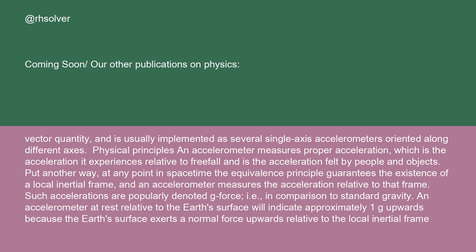An accelerometer measures proper acceleration, which is the acceleration it experiences relative to freefall and is the acceleration felt by people and objects. Put another way, at any point in space-time, the equivalence principle guarantees the existence of a local inertial frame, and an accelerometer measures the acceleration relative to that frame.